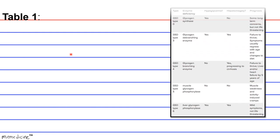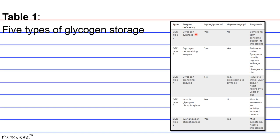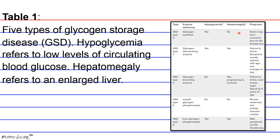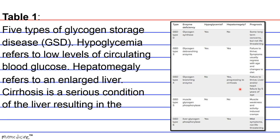Table one, five types of glycogen storage disease. Hypoglycemia refers to low levels of circulating blood glucose. Hepatomegaly refers to an enlarged liver. And cirrhosis is a serious condition of the liver resulting in the accumulation of scar tissue.